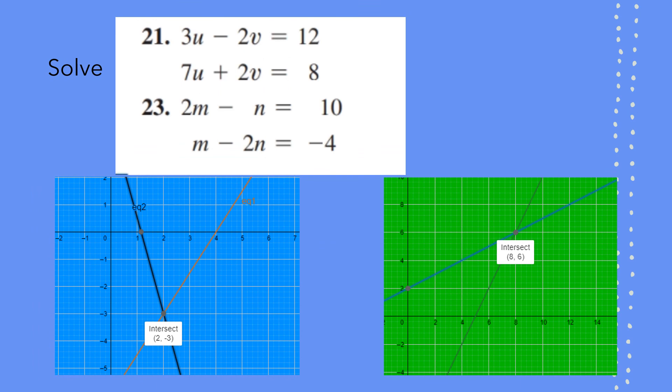Again, for these problems also, we can use the GeoGebra method. For the first one, the intersecting point is 2, negative 3. So that becomes a solution. For the second set, I have 8, 6 as the point of intersection. So that becomes a solution.